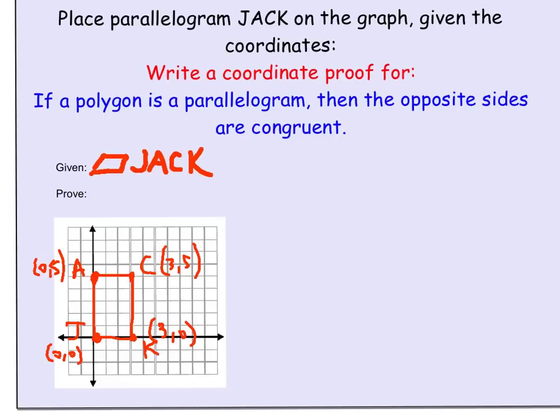We can see it looks like a rectangle. We're trying to prove that the opposite sides are congruent. Looking at the picture, AC is opposite JK, so we're proving AC is congruent to JK. And AJ is opposite CK, so we're showing AJ is congruent to CK.